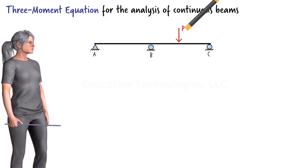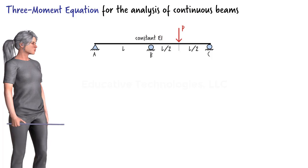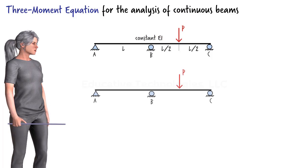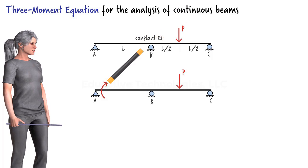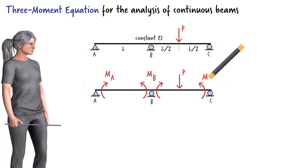Consider this two-span beam. Let's refer to the internal moments at points A, B, and C as MA, MB, and MC, respectively.